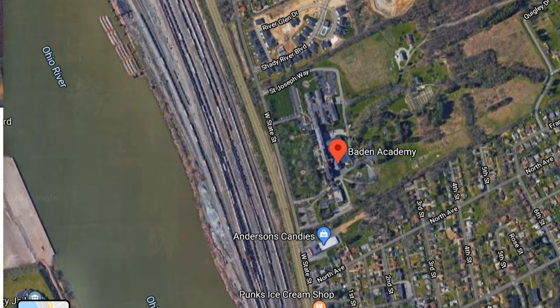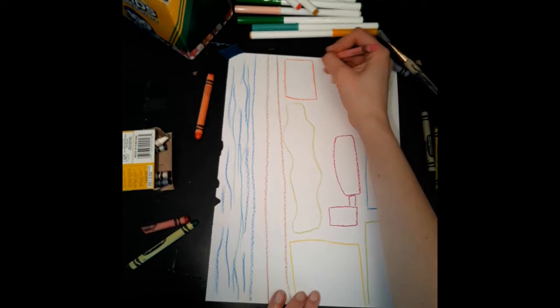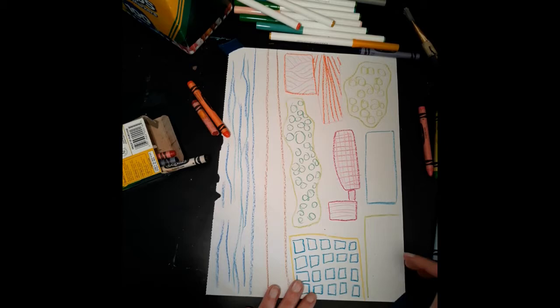With a grown-up's help, you can use Google Maps to look at different locations from above. This is Baden Academy. I'm going to draw a landscape viewed from above inspired by Baden Academy and inspired by Thiebaud's paintings of fields. First, I'm drawing my main landmarks and shapes. Then I'm filling them in with patterns. They don't have to look just like real life. What I'm trying to do is make a beautiful collection of patterns and colors.